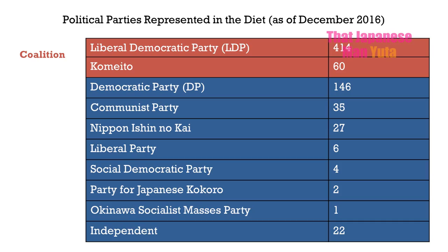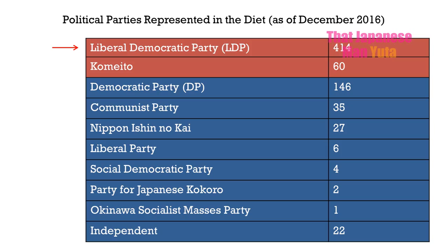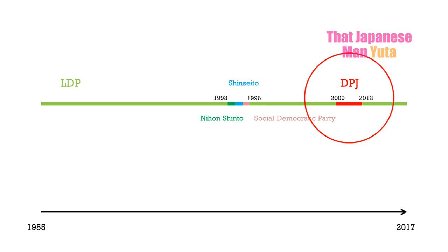If you talk about Japanese politics, the most important component would be political parties. In the Diet, we currently have 9 political parties represented, though we have more that don't have any representation. And yes, we do have a communist party. But the biggest ones are LDP, which is the ruling party, and the Democratic Party. LDP has been in power most of the time since its inception in 1955. The only time LDP was not in power was between 1993 and 1996, and between 2009 and 2012.